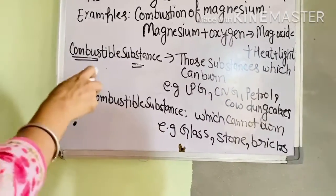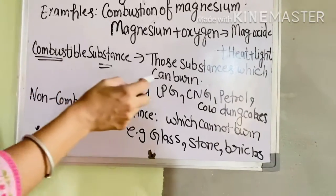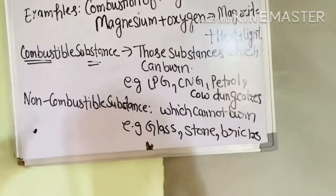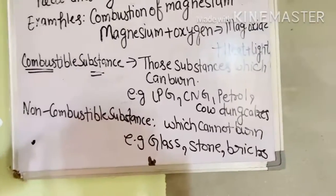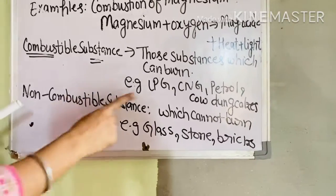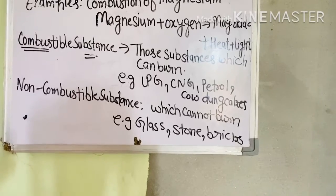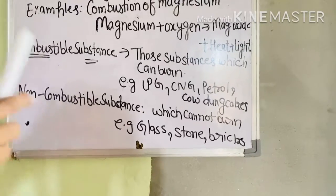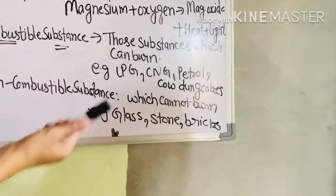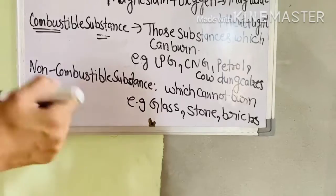Substances are divided into combustible and non-combustible. Combustible substances are those which can burn. If a substance can burn, it is combustible. The other type is non-combustible.